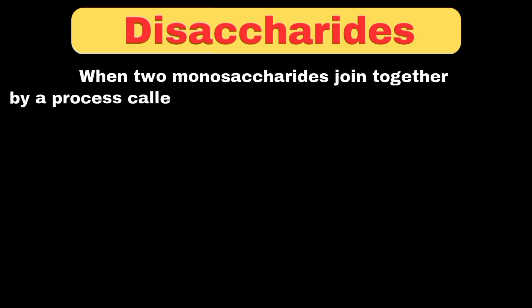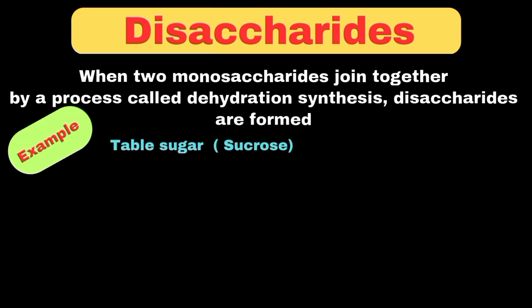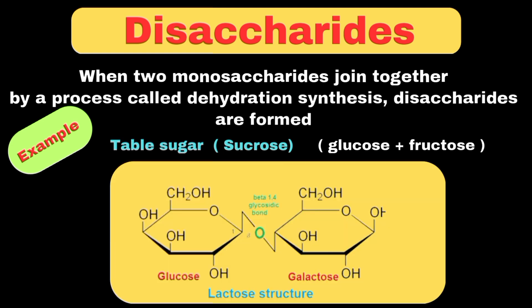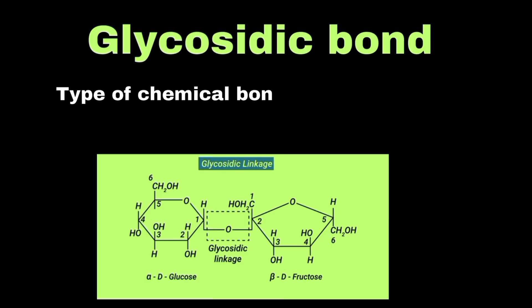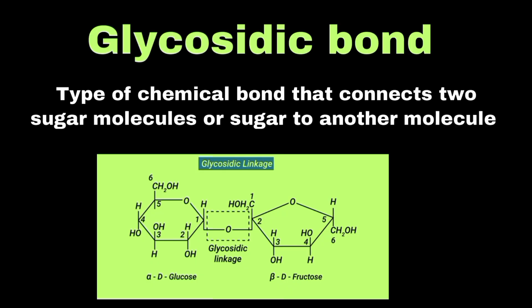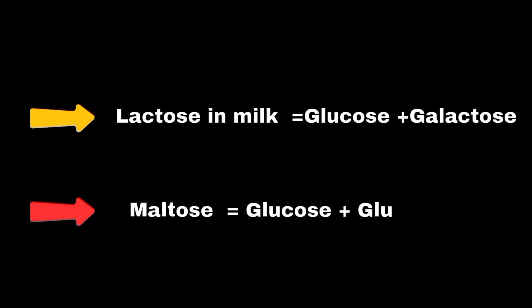Moving toward disaccharides: when two monosaccharides join together through a process called dehydration synthesis, they form a disaccharide. For example, table sugar, also known as sucrose, is formed when glucose and fructose combine. During this combination, one hydrogen atom from one sugar and one hydroxyl group from another combine to form water, and the two sugars become linked by a glycosidic bond — a type of chemical bond that connects two sugar molecules. Similarly, lactose in milk is formed when glucose and galactose combine, while maltose is formed when two glucose molecules join together.